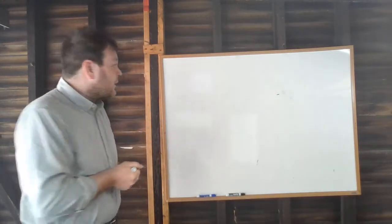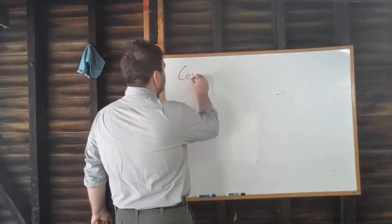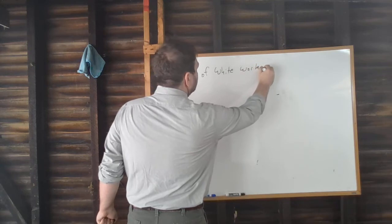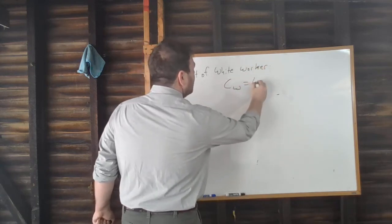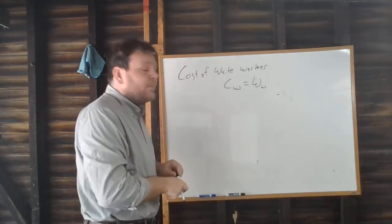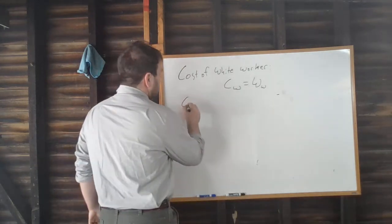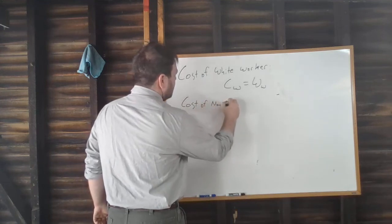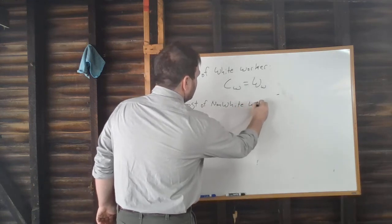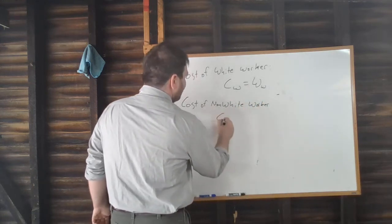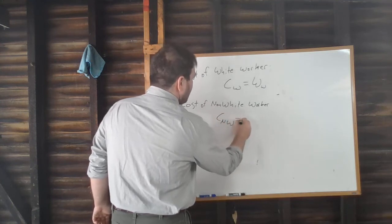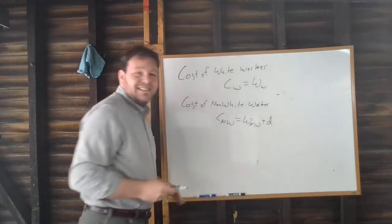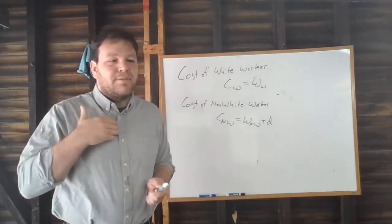Formally, the cost of hiring a white worker, CW, is just the wage you pay that white worker. The cost of hiring a non-white worker, CNW, is the wage paid to that worker plus D, where D is a discrimination coefficient representing the employer's level of distaste.